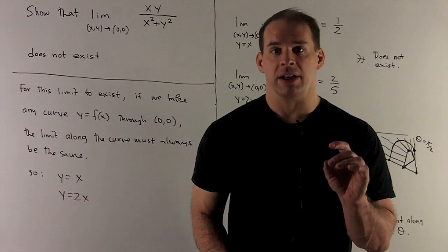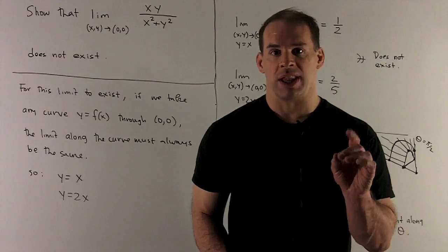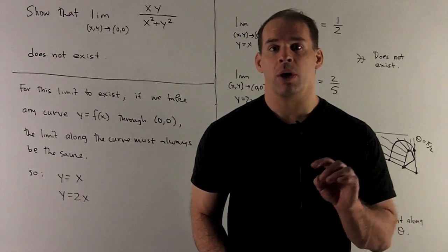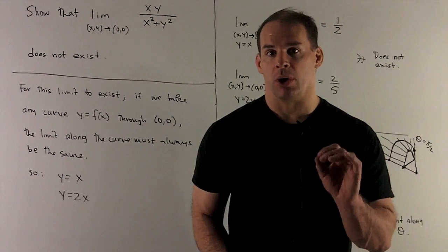So what we're going to do is find two curves. We'll use the lines y=x and y=2x, and then we'll show that we get different answers as we go along those curves.